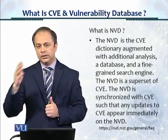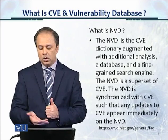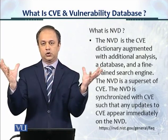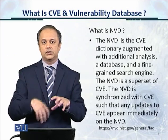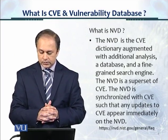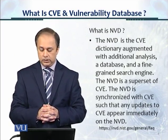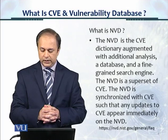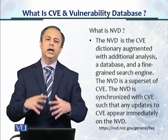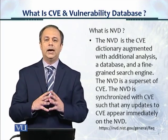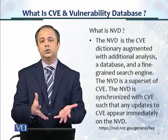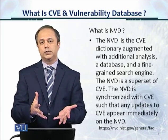In the hierarchy, CVE actually lies below, and NVD is the complete database — NVD is a superset, and CVE is a part of this hierarchy. The NVD is synchronized with CVE, such that any updates to CVE appear immediately on the NVD. The CVE is a common enumeration and numbering scheme, and the vulnerability database details, like shown in the screenshot, is actually separate.